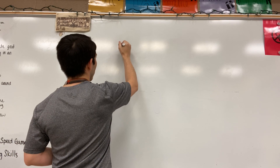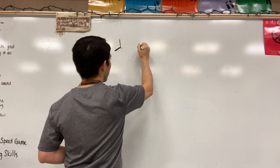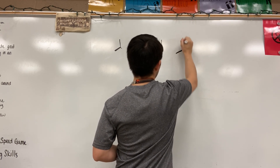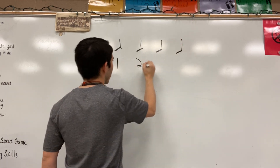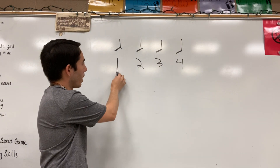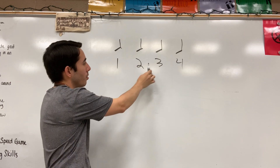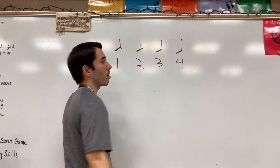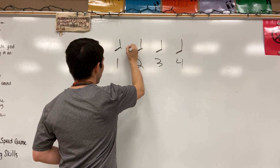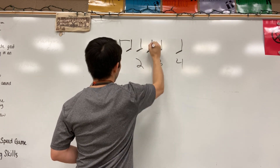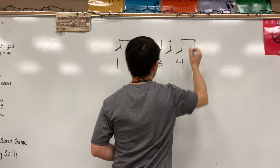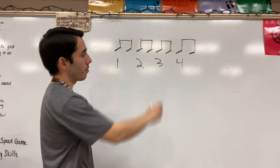Let's get started. We have four quarter notes, just like normal — my terrible-looking quarter notes here — with a big one, big two, big three, and a big four. So we would count this as one, two, three, four, just like normal. Now I'm going to add eighth notes, just like that.